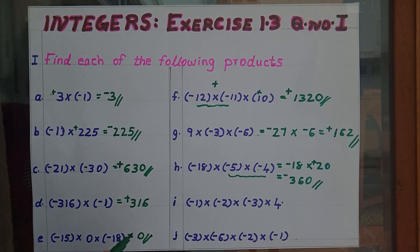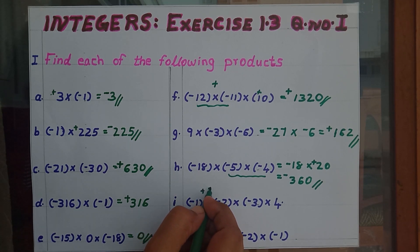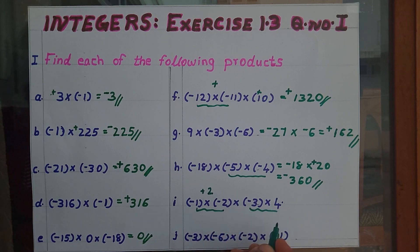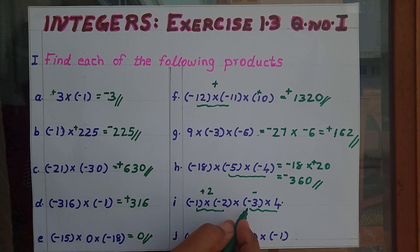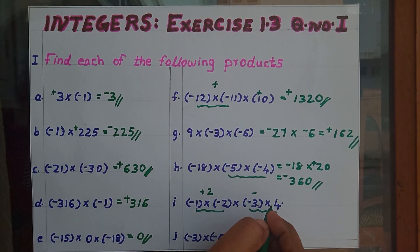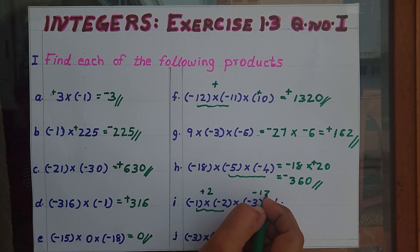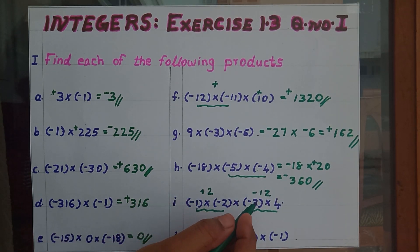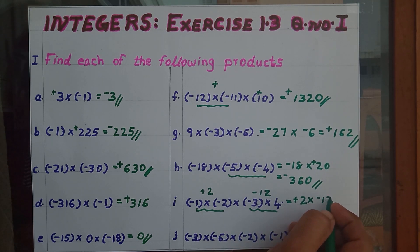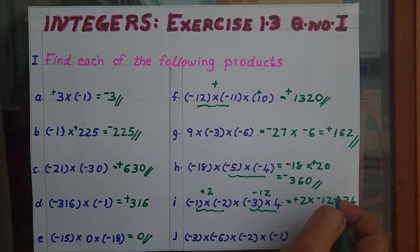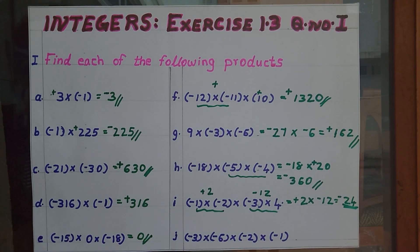The next one: minus 1 into minus 2 into minus 3 into positive 4. Combining the first two gives positive 2. Combining minus 3 into positive 4 gives minus 12. Then positive 2 into minus 12 equals 24, and plus into minus gives minus. So minus 24 is our answer.